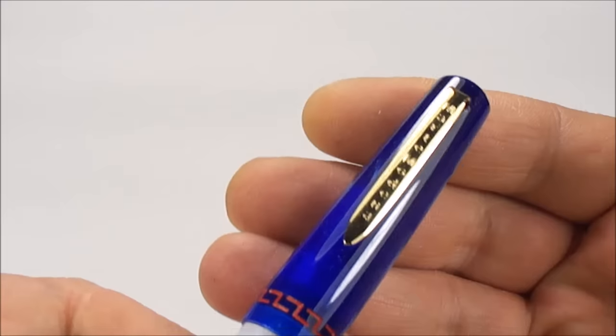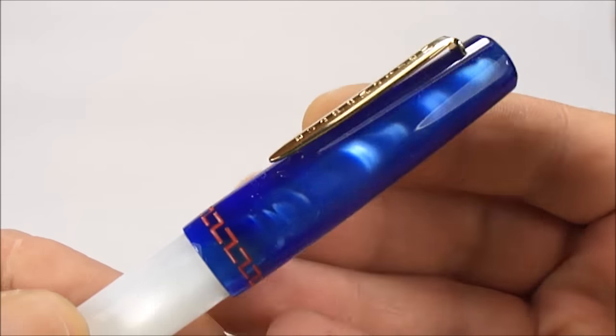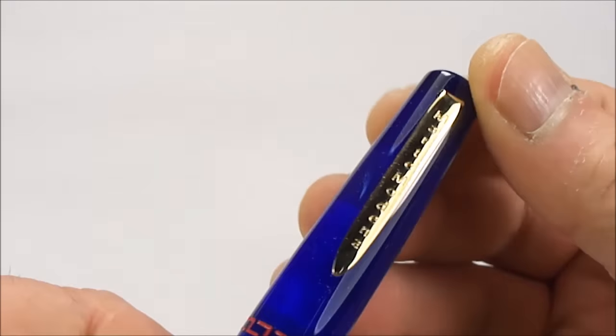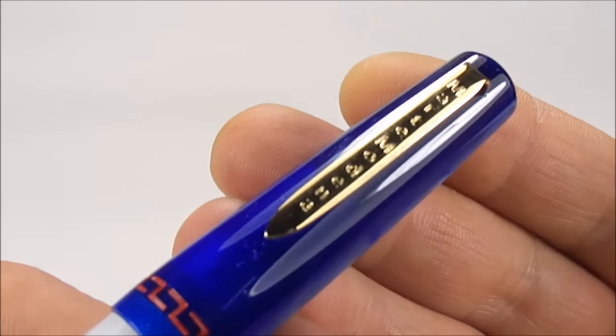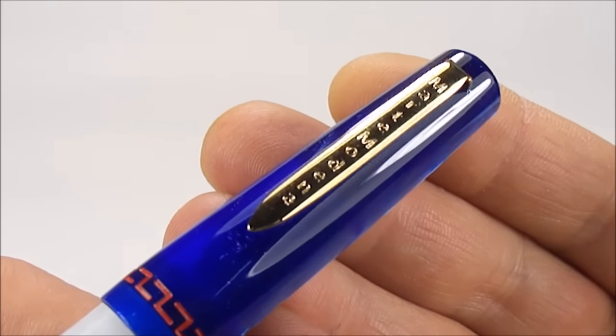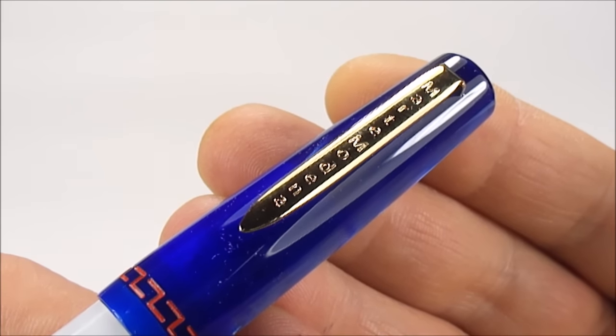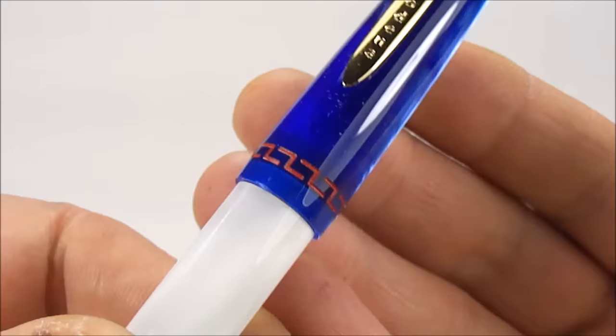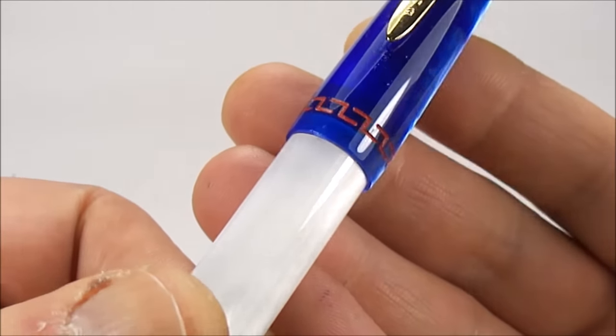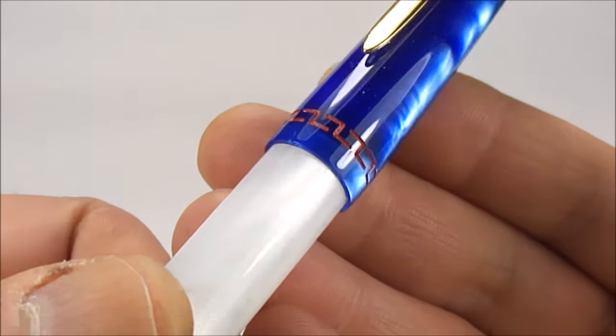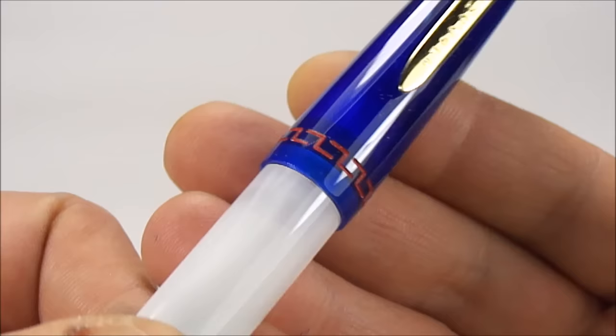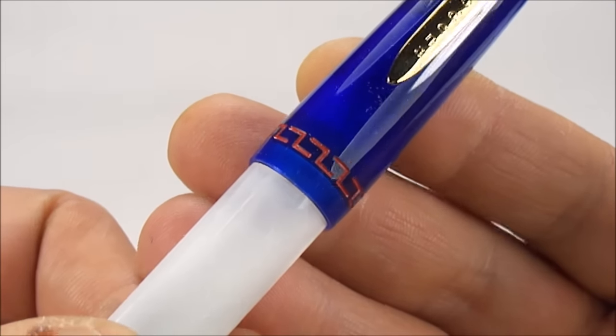The pen comes with this standard clip to the top of the cap which is gold plated, and if I bring it a little bit closer you'll notice it's been laser etched with the name Marte Modena. To the bottom of the cap, it's not so much a cap band, I think it's been engraved into the cap. It's got this lovely Greek stylized band around the bottom of the cap.